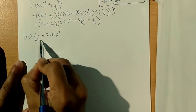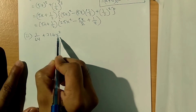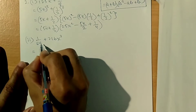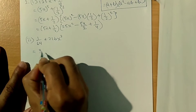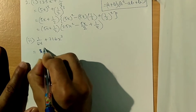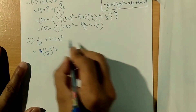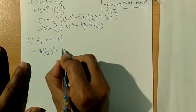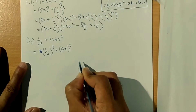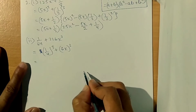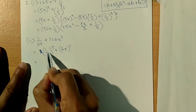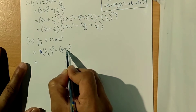Sub number 2: 1 by 64 plus 216x cube. Now, 1 by 64 can be written as 1 by 4 cube, and 216x cube can be written as 6x cube. So here a is 1 by 4 and b is 6x.